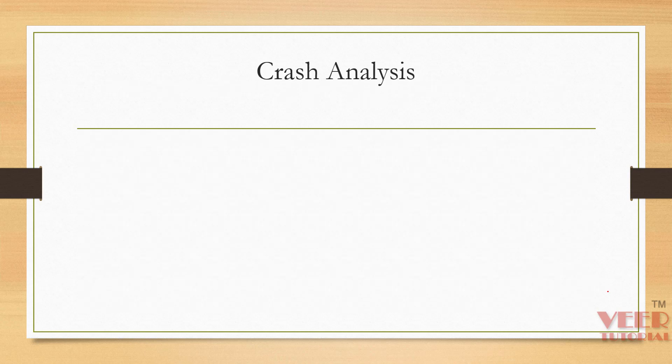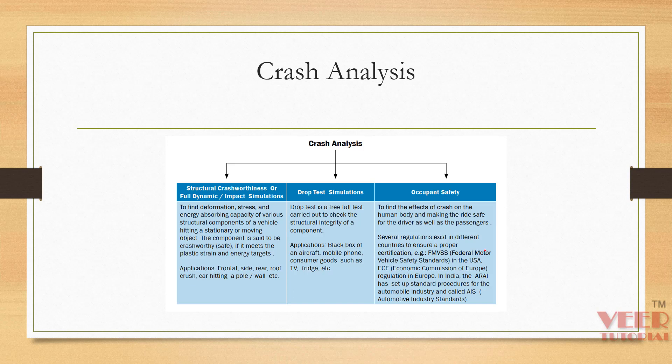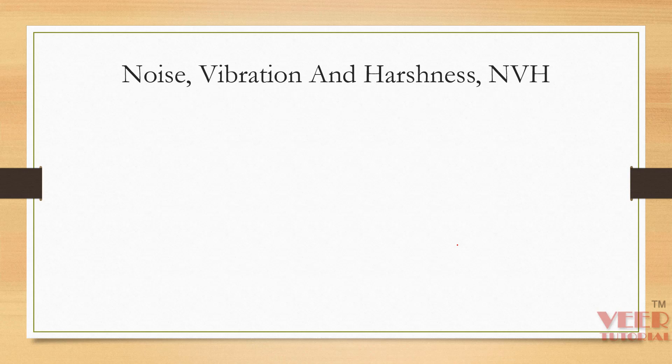Nowadays performing crash analysis is very important. We have multiple types: structural worthiness for passenger safety, including frontal, side, rear impact, roof crush, and car hitting a pole. Then we have drop tests for items like aircraft black boxes, mobile phones, and consumer goods such as TV and fridge. We also analyze occupant safety using different standards to find the rider safety in automotive and aerospace applications.